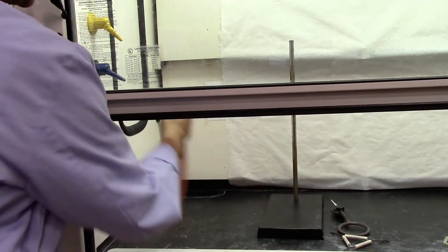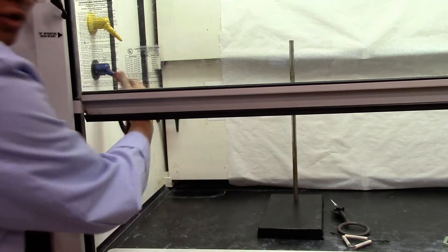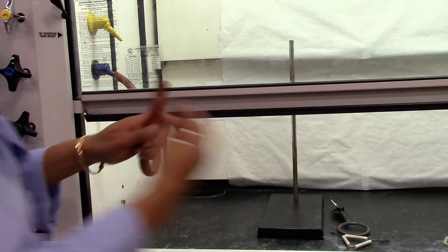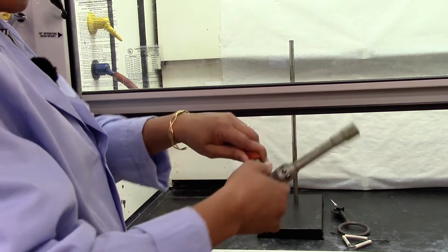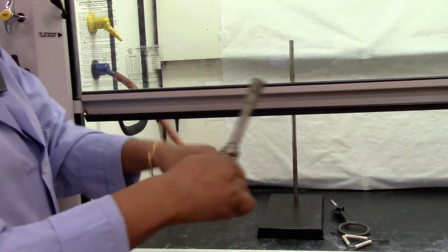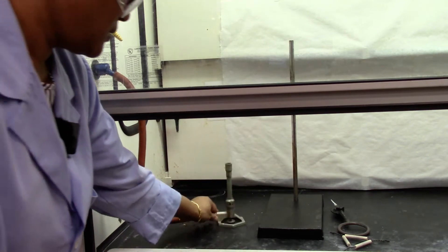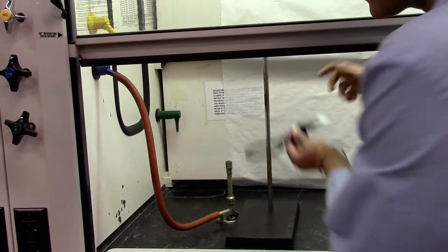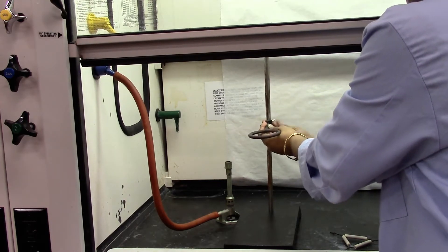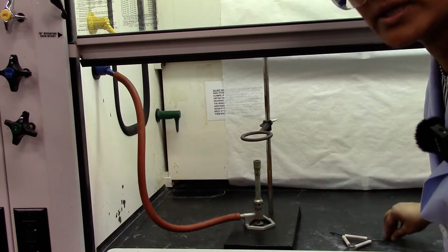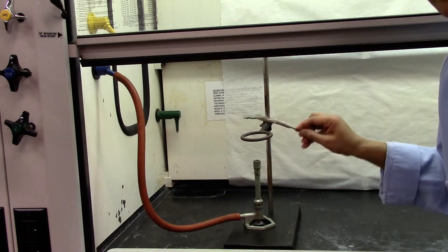I'm going to connect the tubing to the gas line which is blue in this hood and then connect this with my Bunsen burner and I'm going to clamp a ring stand. Place it underneath and I'm going to put a clay triangle on top.